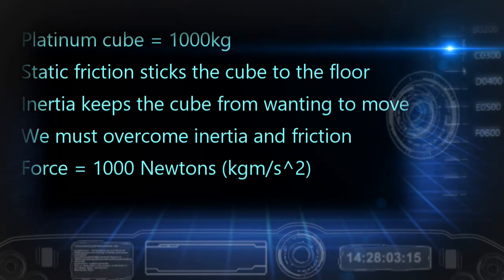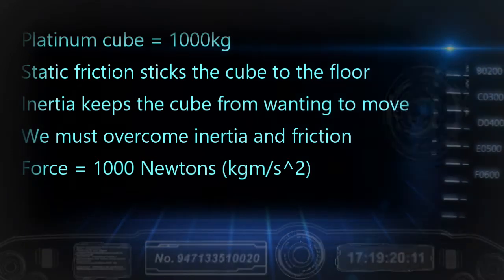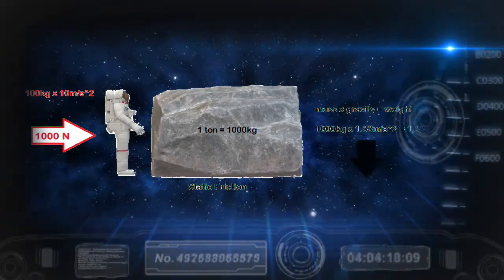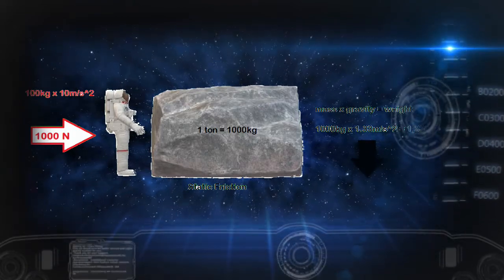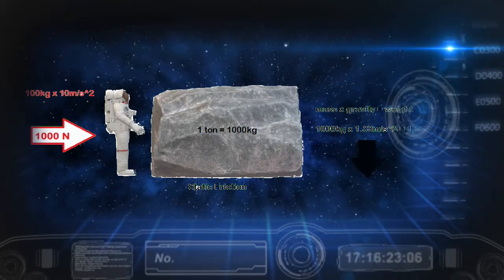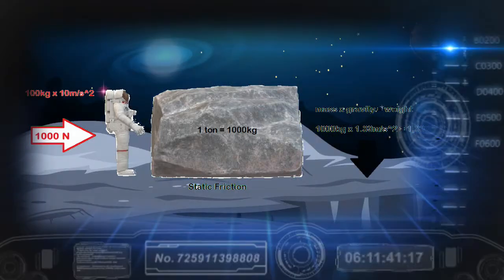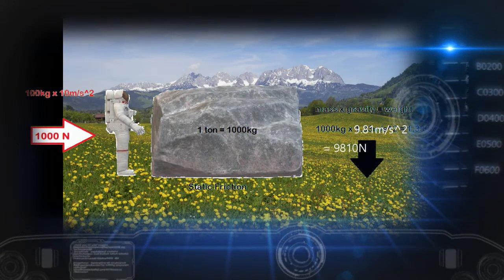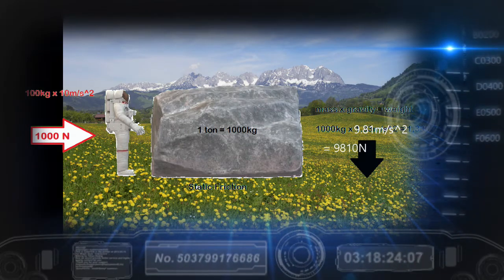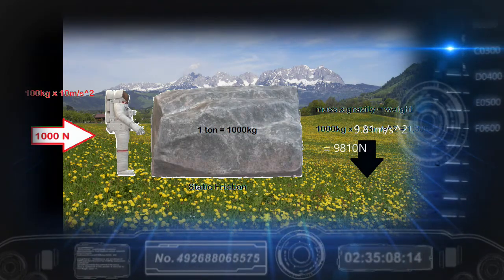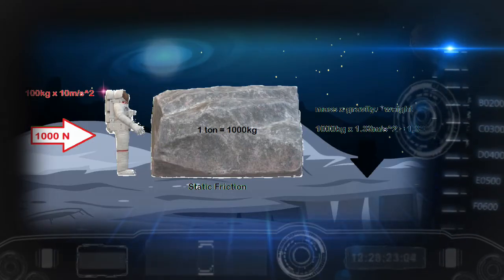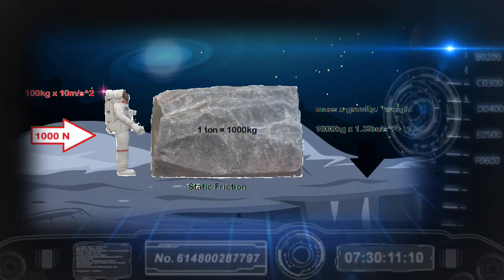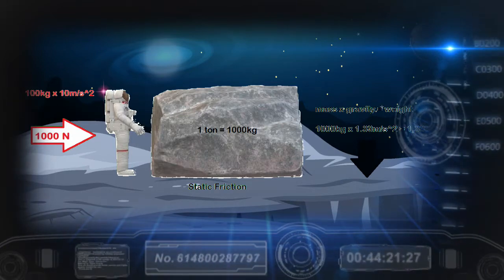The friction depends on the surface — a smooth metal surface is better than a rough one. The area in contact and the weight of the object are also factors. If we are in free fall, there is no weight pushing the cube to the surface. On the moon, gravity creates an acceleration of 1.33 meters per second squared compared to Earth's 9.81 meters per second squared. Since friction depends on mass and the force of gravity, we can slide a much larger cube on the moon than on Earth — but our weight on the moon is also less, making it easier for the cube to push us backwards.